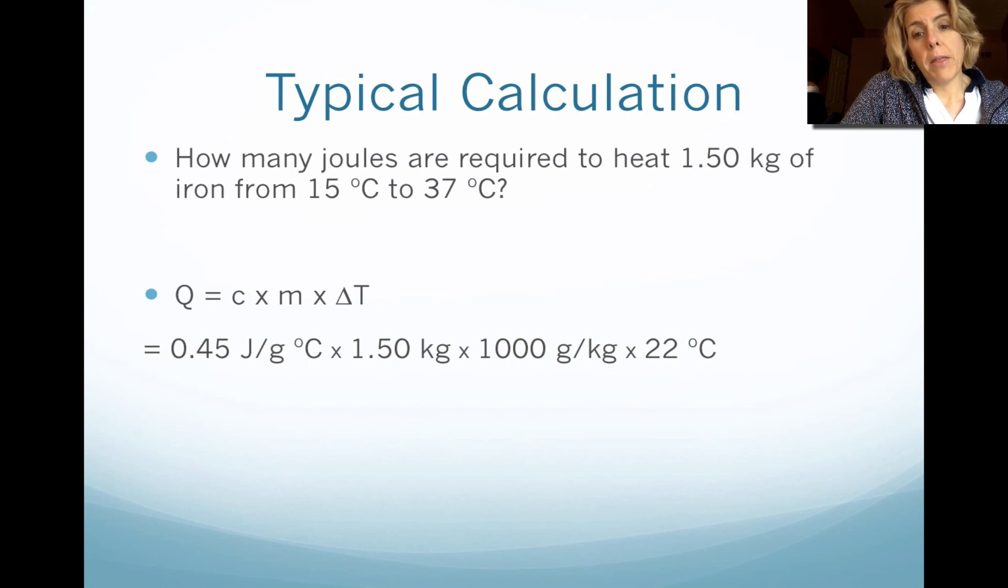And then lastly, T final, which is 37 degrees minus 15, gives us 22 Celsius. When you multiply all three together, you get 15,000 joules.